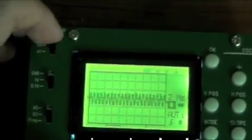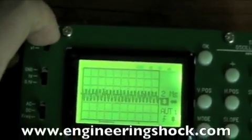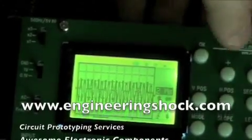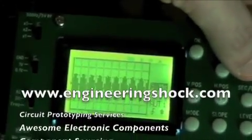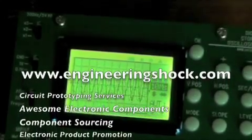Now I'll do 1 volt times 1 volt per division. There we go. Now we'll change the time per division. There's our nice sine wave.